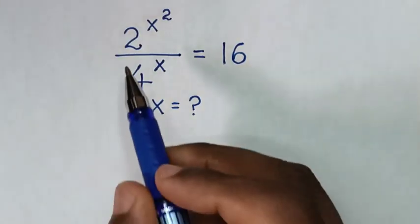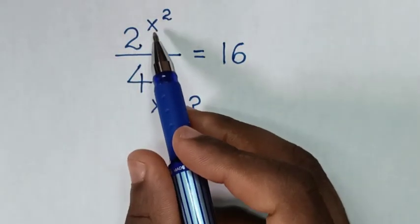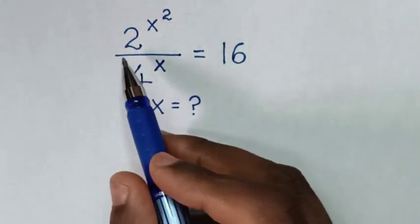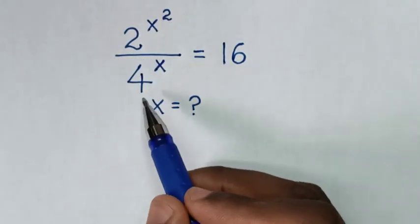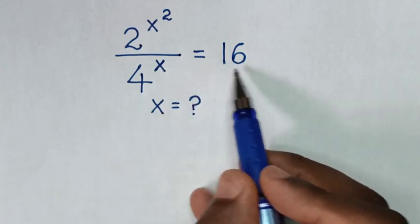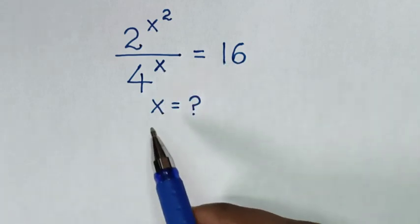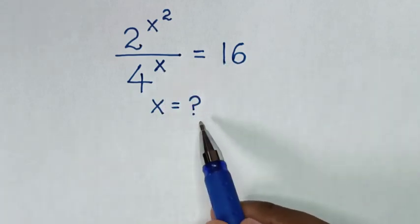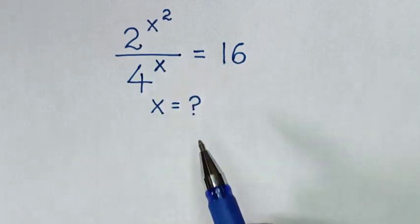Hello, how to solve 2 power of x squared over 4 power of x is equal to 16, to find the value of x from this equation.